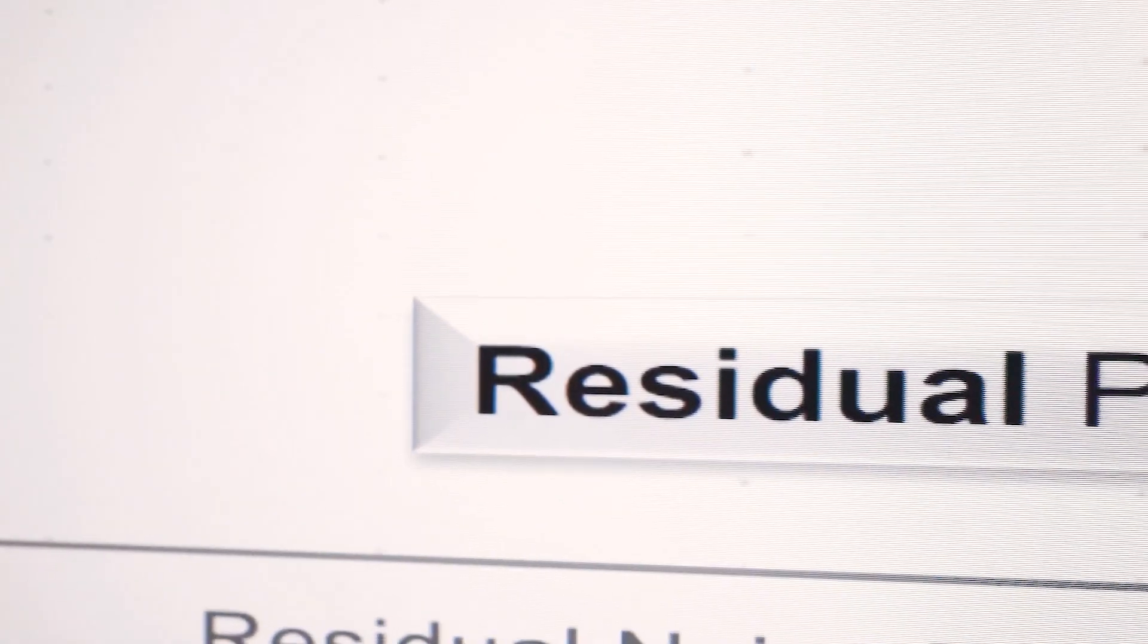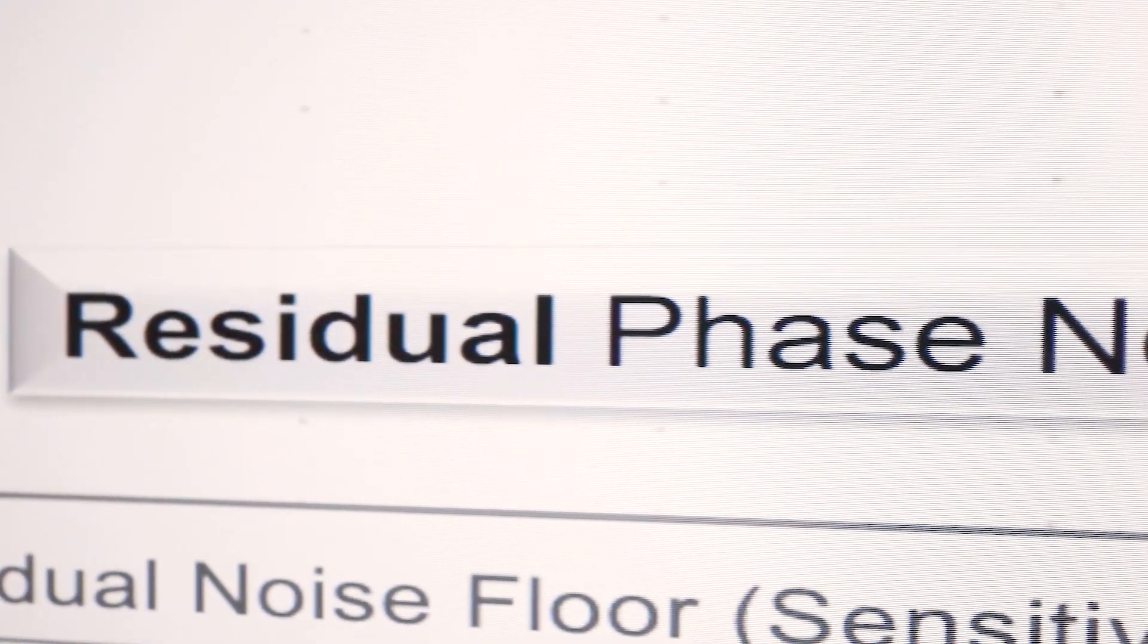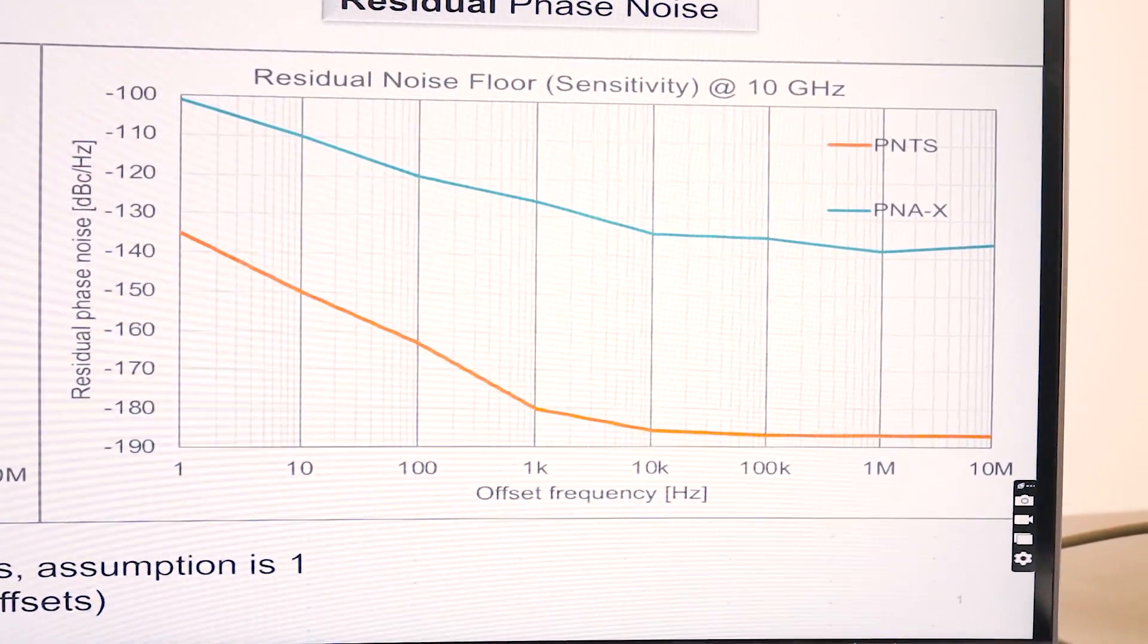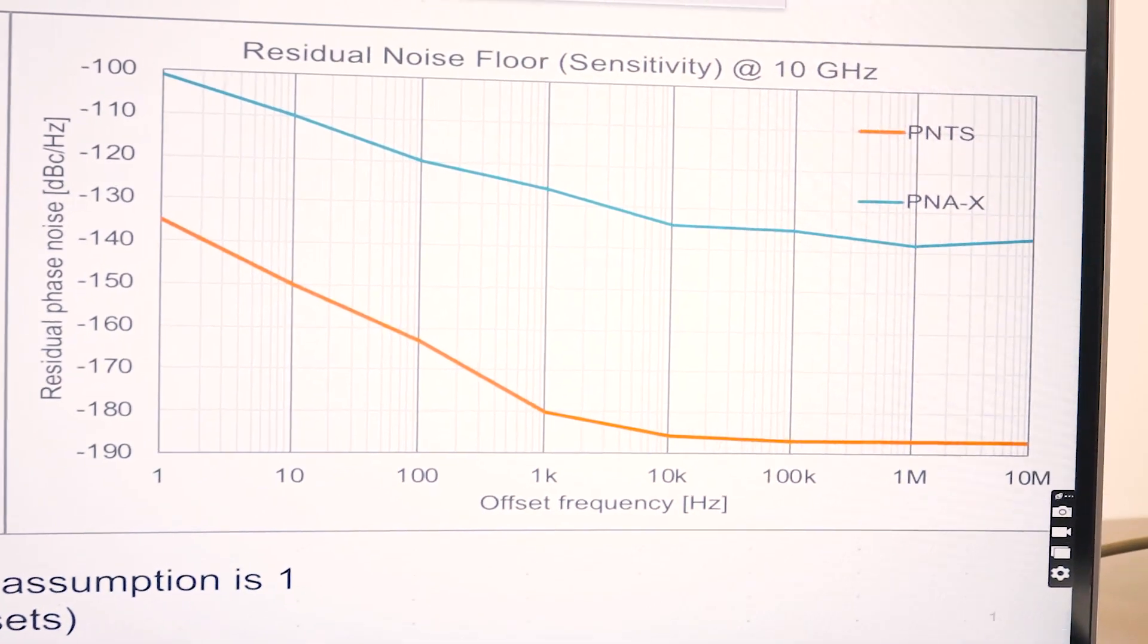Over here is the residual noise sensitivity charts for the Keysight solutions, and you'll notice we only have two additive or residual noise solutions: the PNAX and the PNTS.